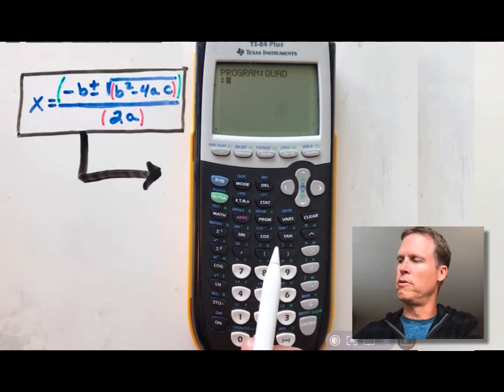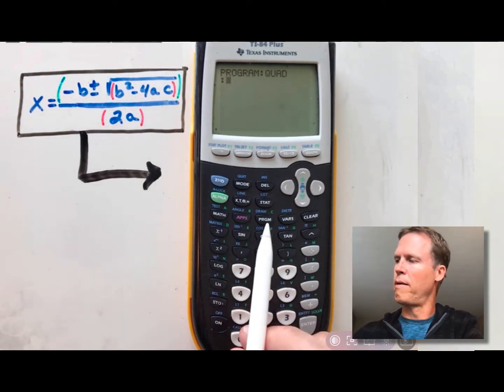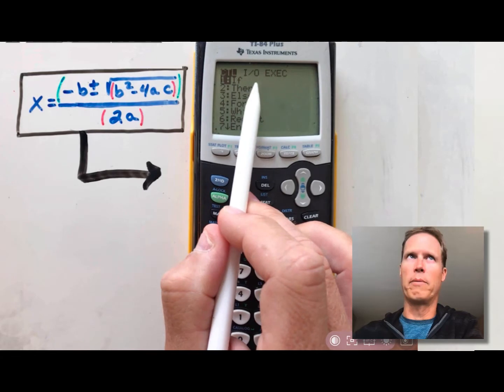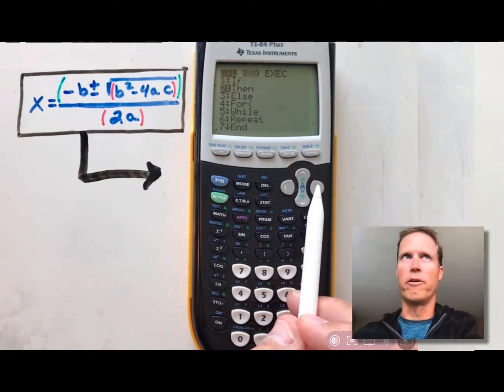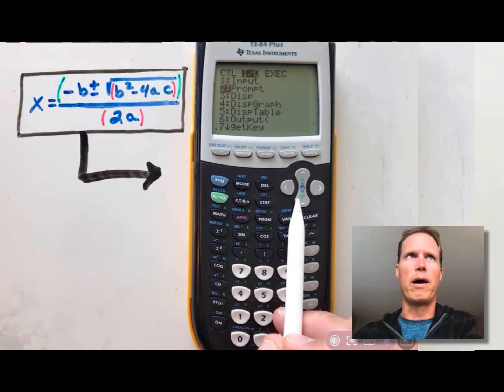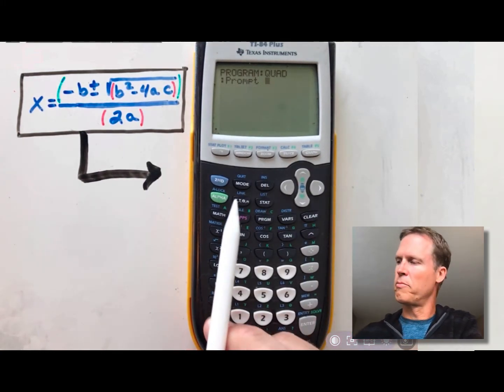The next thing you need to do is you'll want to prompt the user for the three letters that are in this formula. So we're going to do the program button again. We're going to choose this I-O option for input-output, and then we're going to choose the option for prompt, which is option number 2. Then press enter, and we'll put in our three letters here.